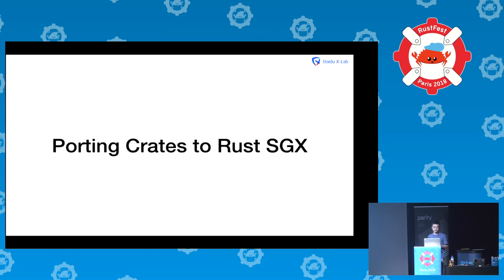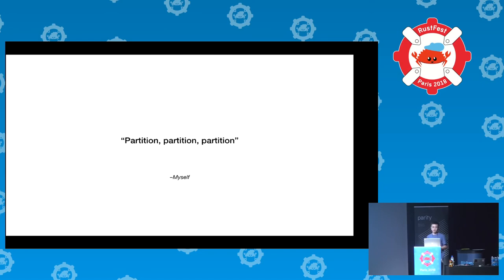Next, I'll tell you how to port existing projects to Rust SGX to protect your data and privacy. Before porting anything, you need to partition it. For example, when porting Rustls, I had to partition the Rustls framework, putting synchronous I/O into the untrusted world and keeping everything synchronous in the trusted world. Everybody should do the partition before starting to code.